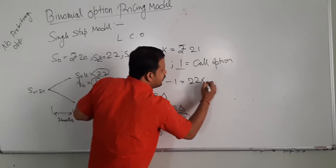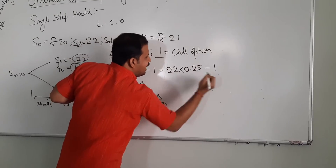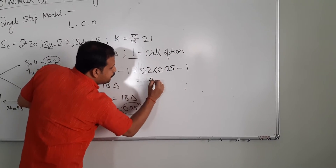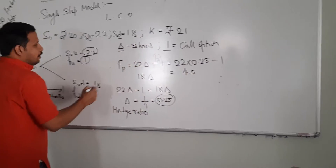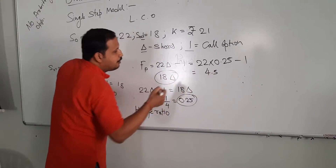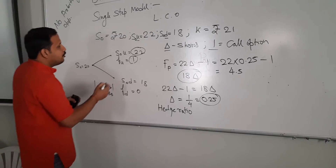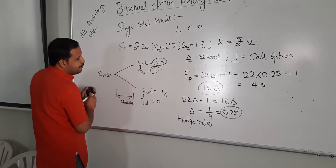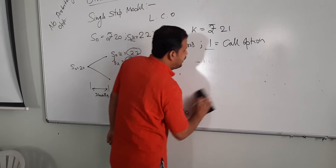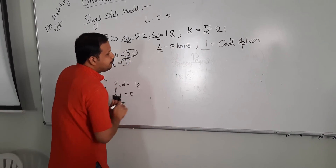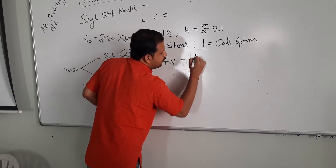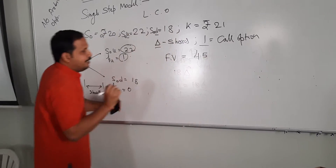We will plug in 22 multiplied by 0.25 minus 1, and on solving we will get 5.5 minus 1, that is equal to 4.5. Similarly, if we plug in the value of delta into the downward case, we get the same value, 4.5. So the future value of this portfolio is equal to 4.5.